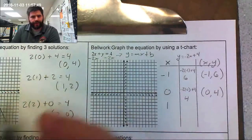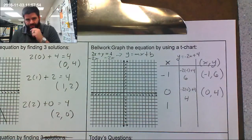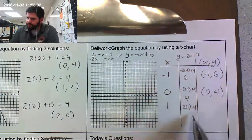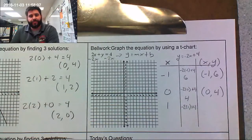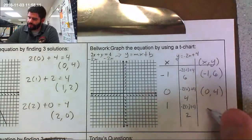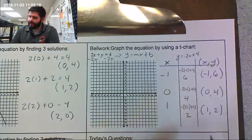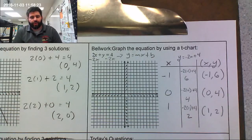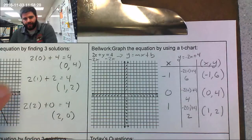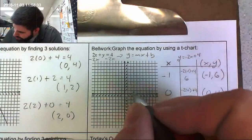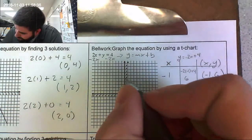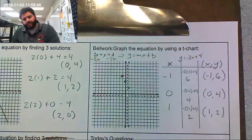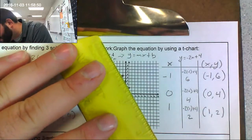That ordered pair 0 and 4 matches one from method one, so I'm on the right track. Now plugging in 1: negative 2 times 1 is negative 2, and negative 2 plus 4 is positive 2, giving me the ordered pair 1 and 2. That also matches. So plotting: 1 and 2 goes here, 0 and 4 goes up here, and negative 1 and 6 is way up there. Then I connect the line.